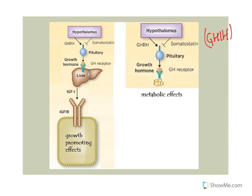Now let's look at what growth hormone does. Another term for growth hormone is somatotropin. It has growth effects, and some of those effects are direct — where the hormone binds to its receptor and has effects on metabolism. But some of its effects are indirect, through the production of things called somatomedins, which mediate growth effects.